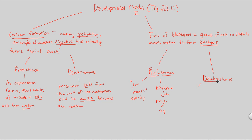In the deuterostome side of the story, deutero refers to second, and stome still means opening. These organisms have a second mouth opening. If the mouth is second in deuterostomes, then the blastopore must develop into something else first — the other opening that every organism has: the anus.